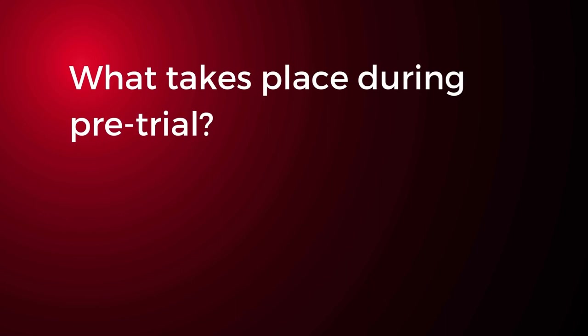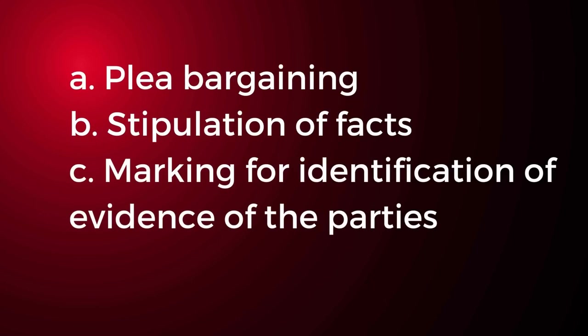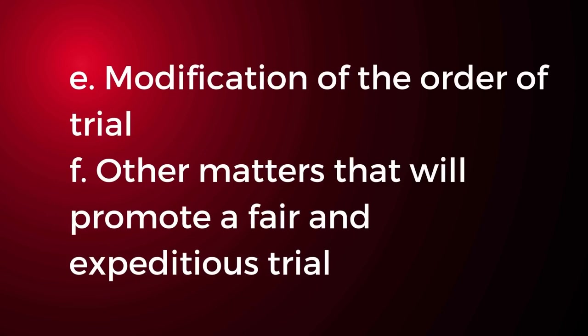Other than plea bargaining, what else may take place during pre-trial? A. Plea bargaining; B. Stipulation of Facts; C. Marking for identification of evidence of the parties; D. Waiver of objections to admissibility of evidence; E. Modification of the order of trial if the accused admits the charge but interposes a lawful defense; and F. Other matters that will promote a fair and expeditious trial of the criminal and civil aspects of the case.